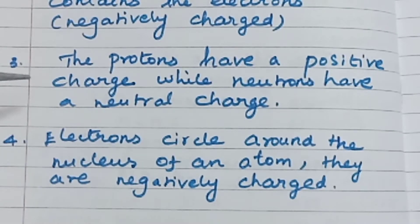The outermost region of the atom are called shells and contains the electrons, which are negatively charged. Third point: the protons have a positive charge while the neutrons have a neutral charge. Electrons circle around the nucleus of an atom. They are negatively charged.